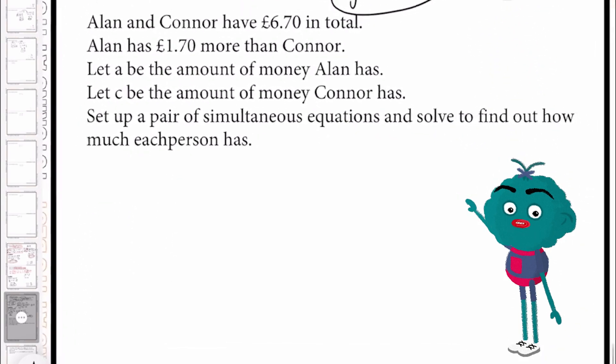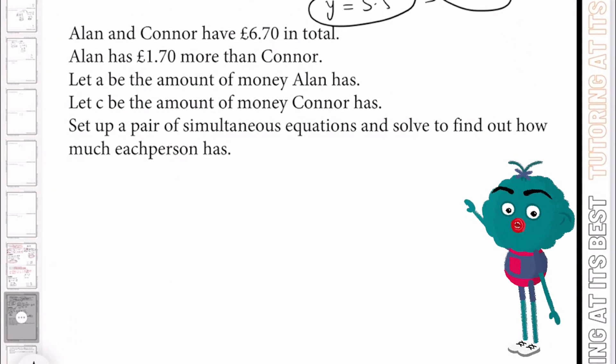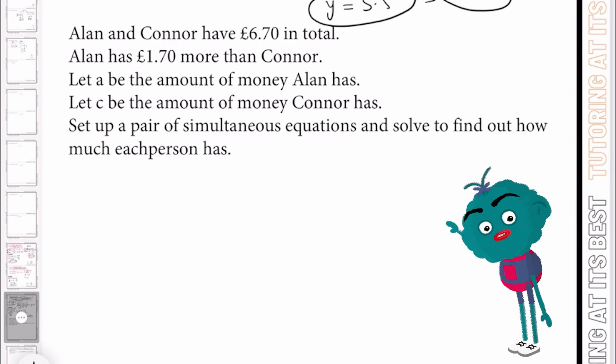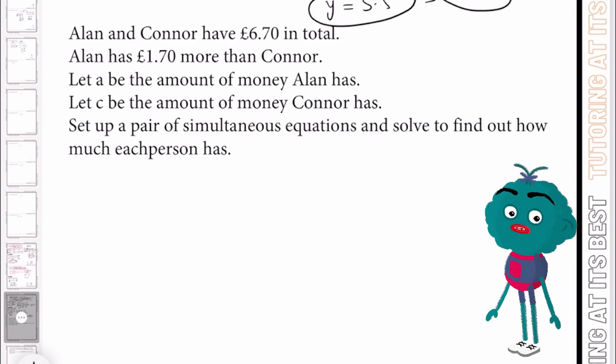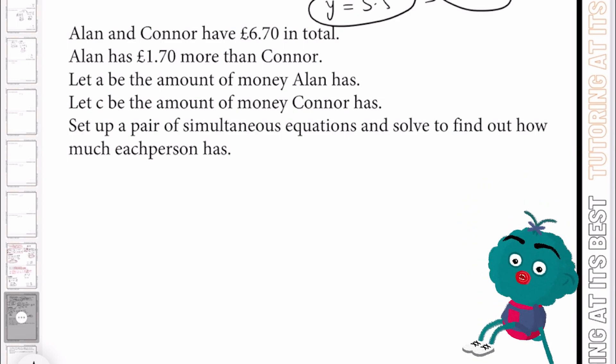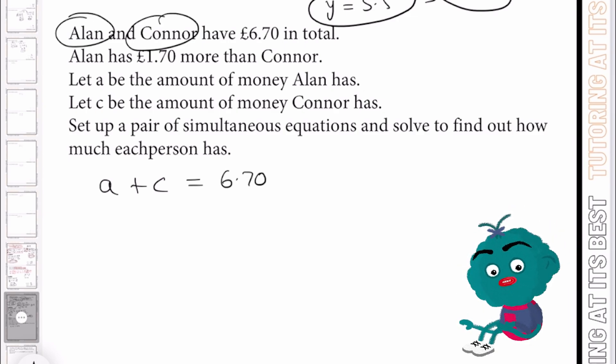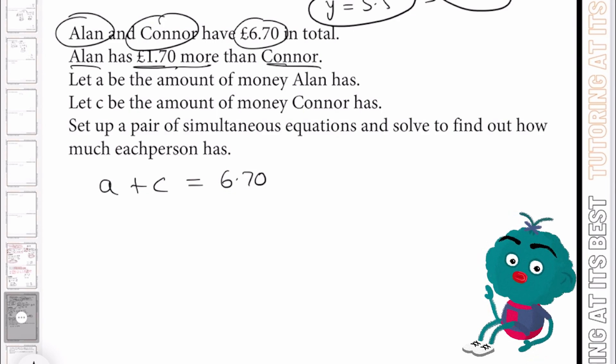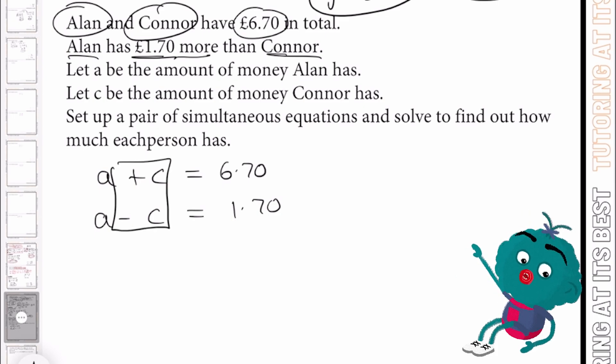I hope that question was clear. Let's move over to the second last question. So Alan and Connor have £6.70 in total. And Alan has £1.70 more than Connor. They told us to let A be the amount of money Alan has and C be the amount of money that Connor has. So let's set up a pair of simultaneous equations. We'll have A plus C, which equals £6.70. And now we know that Alan has £1.70 more than Connor. So the difference of this is £1.70.